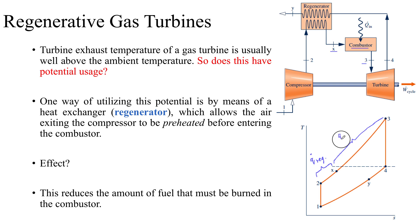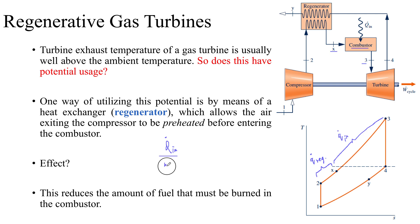So your actual Q dot in is now from state x to state 3. It's easier to realize that instead of supplying Q dot in from state 2 to state 3, we have to provide less fuel from state x to state 3. In terms of an equation, Q dot in on a unit mass basis is going to be h3 minus hx, instead of h3 minus h2. For the cold air standard analysis, this would be equal to Cp times (T3 minus Tx).